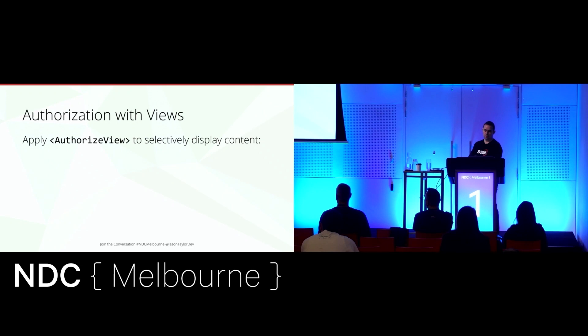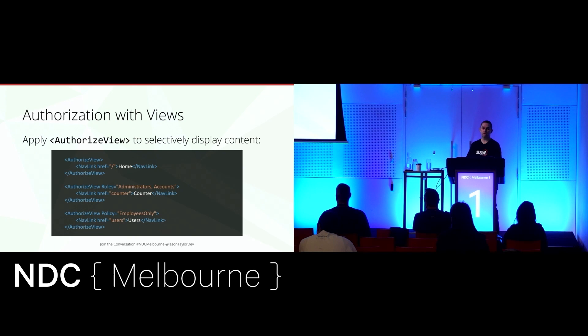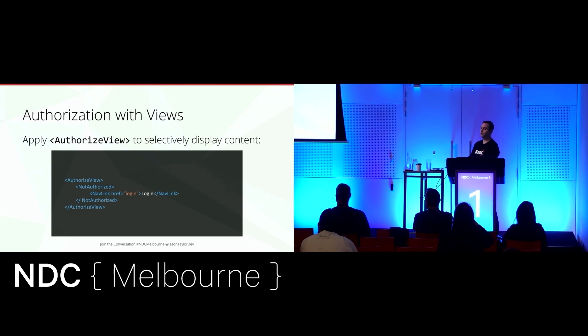Authorization with views: we apply the authorized view to selectively display content. You can see the home link is only accessible to authenticated users, the counter link is only accessible to authenticated users who are a member of one of those roles, and the users link is only accessible to employees. We also have the authorized view specifying what to show if the user is not authorized — the login link will be displayed if the user is not authorized.